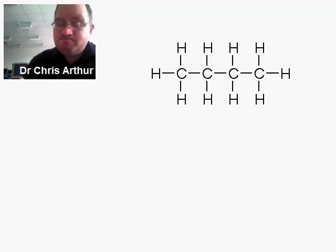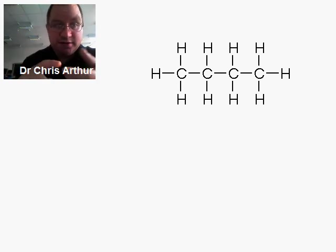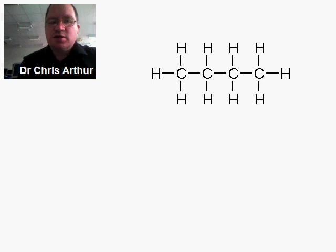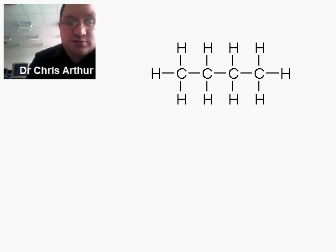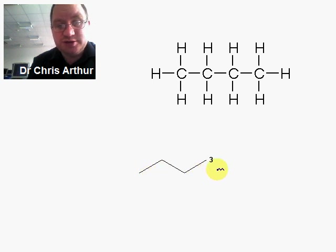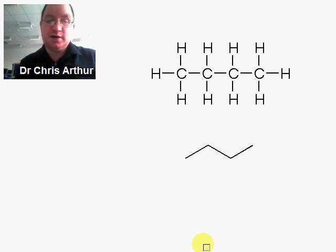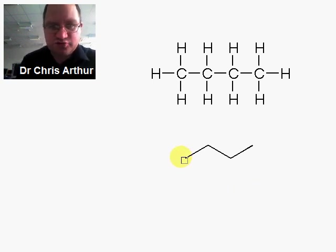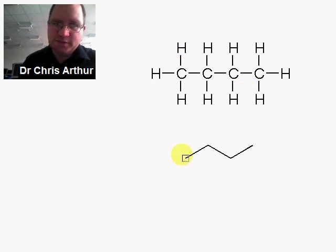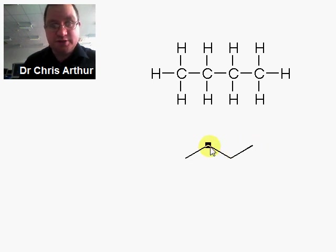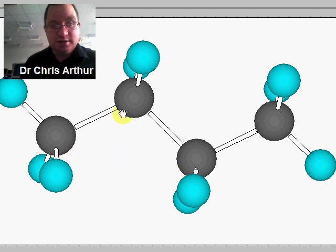So chemists need two things: a quick way to convey information that's easy to draw, and the ability to convey three-dimensional shape. Chemists use a system called line drawings or skeletal drawings. I can quickly draw butane — you'll see we've stripped off all the hydrogens and not written out all the carbons. Instead, what we're left with is a zigzag line representing the bonding between each of the carbon atoms. Flicking back to our three-dimensional model, here is the same zigzag line, starting to represent that three-dimensional space.